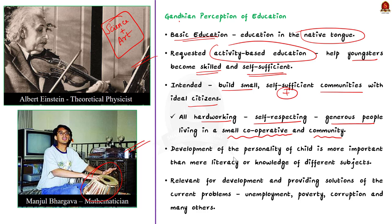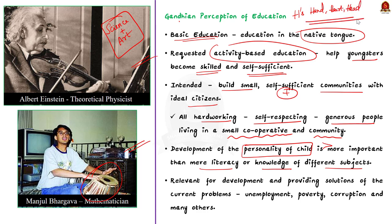In Gandhiji's educational thoughts, the development of the personality of the child is more important than mere literacy or knowledge of different subjects. He believed in life-centered as well as child-centered education. Besides learning of the three R's — that is reading, writing and arithmetic — in school, he insisted on development of the three H's: Hand, Heart and Head. Thus the aim of education should be developing the integrated personality of the child. Gandhian educational thoughts, which are a step to multi-dimensional education, are relevant for development and providing solutions to current problems like unemployment, poverty, corruption and many others.